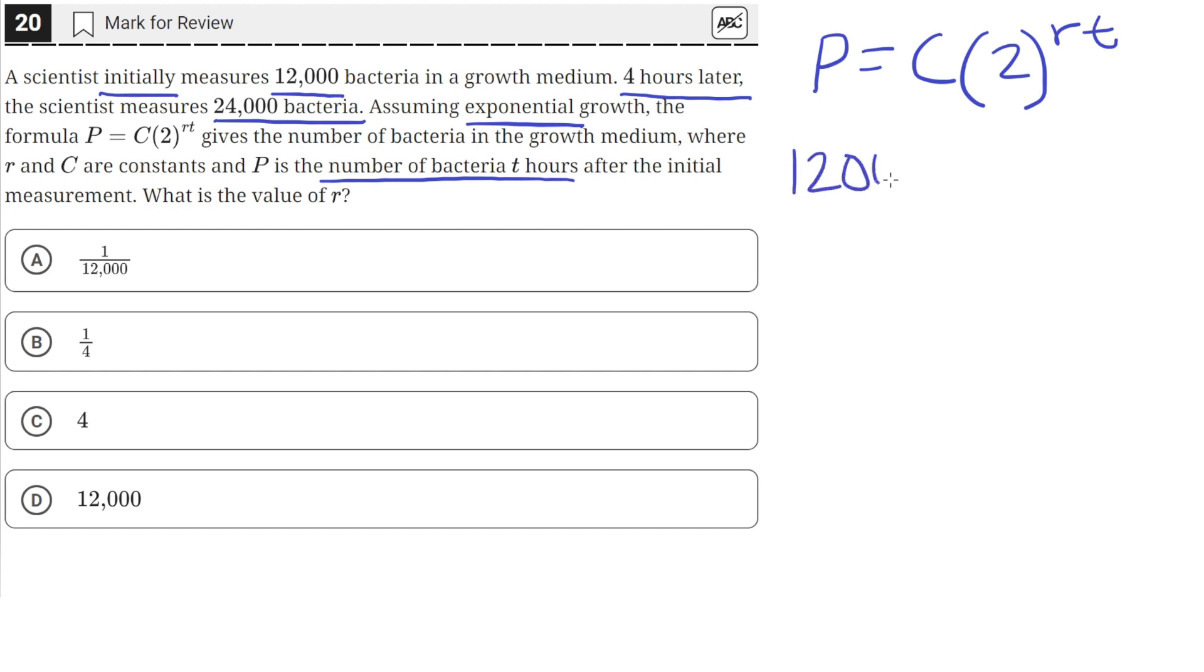12,000, and then T as zero, we would be able to solve for the value of C. So we have C times two, and then this would be raised to the zero, because anything times zero is just zero.